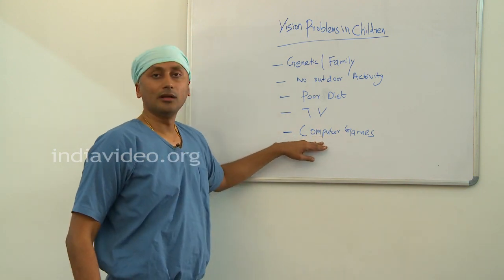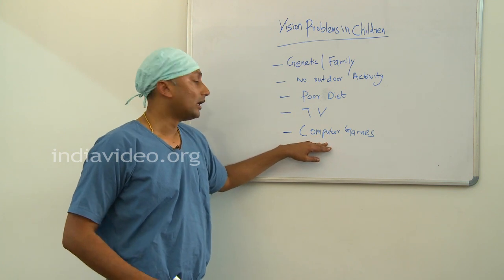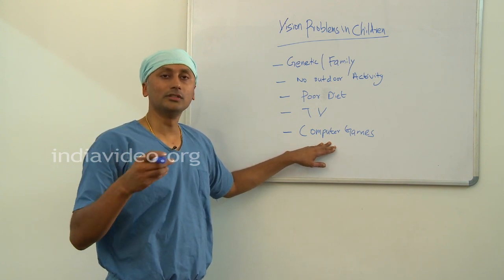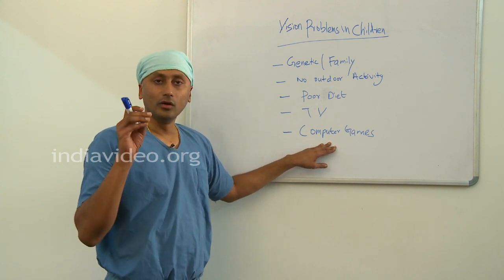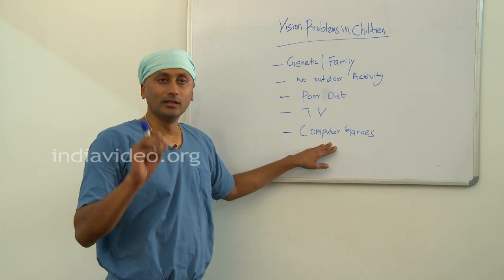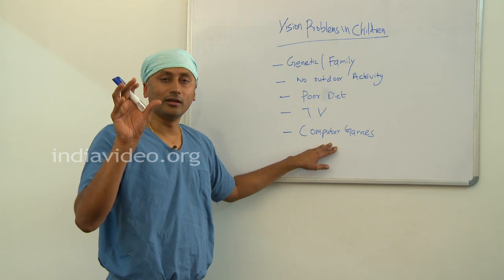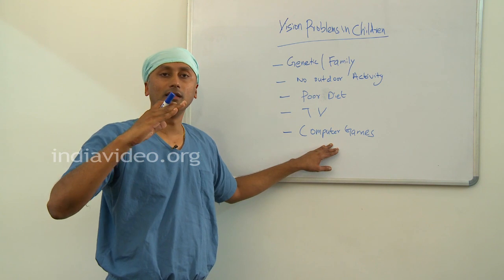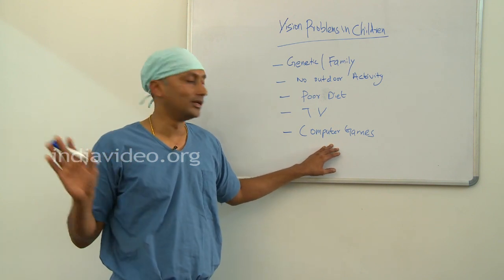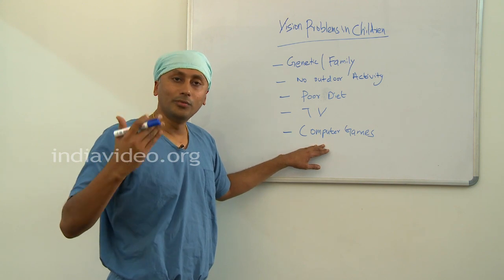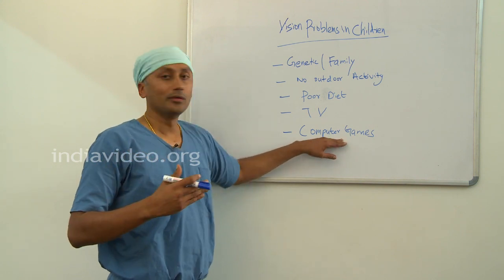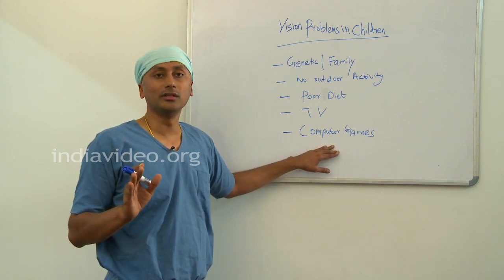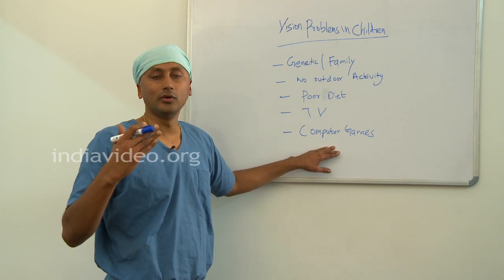The last but not least factor is computer games. There is no problem with computer games in general, but children nowadays play war games with a lot of bomb explosions and fire. Our eyes were designed — evolutionarily — to see danger like fire or a bomb and then run away, not to keep looking at it. But children spend long periods watching war games with bombs and fire, and our eyes do not have the processing capacity to handle that amount of visual stimulation.